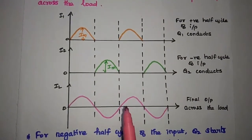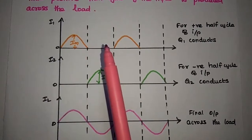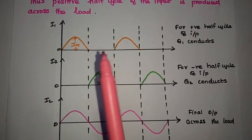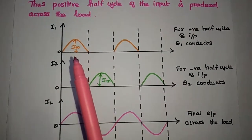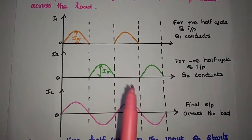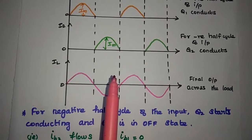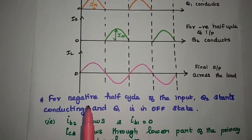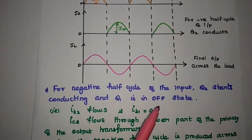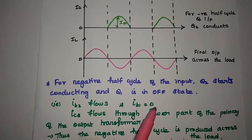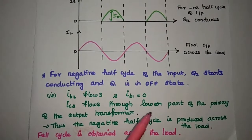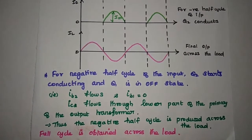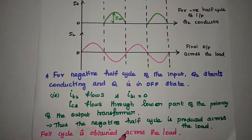As shown in the diagrammatic representation, I1 represents the operation of Q1 and I2 represents the operation of Q2. For the positive half-cycle, Q1 conducts; for the negative half-cycle, Q2 conducts — giving the full 360-degree output signal. For the negative half-cycle of the input, Q2 starts conducting and Q1 is in the off-state, so IB2 flows and IB1 is equal to 0. IC2 flows through the lower part of the primary of the output transformer, and thus the negative half-cycle is produced across the load. Finally, the full cycle is obtained across the load.